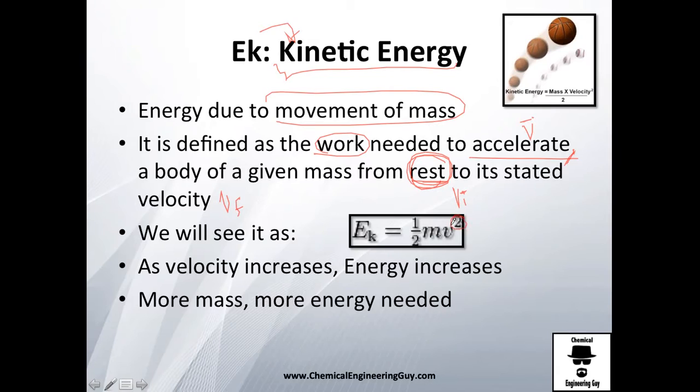We will see it as energy Ek equals half of mass times the velocity to the square. So you can see that velocity is to the square, so you have one meter and you have two meters per second—this one is going to be affected by one and this one is going to be affected by four.